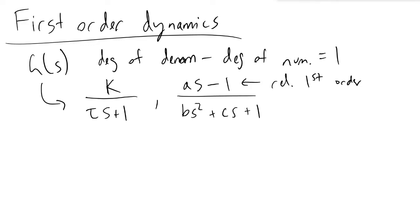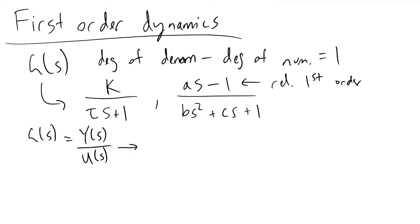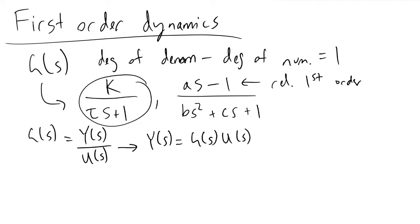To continue our analysis of a first-order system, the transfer function G(s) is defined as Y(s) divided by U(s) — our output divided by our input. Solving for Y(s), we get G(s) times U(s), which in our example equals k over (τs + 1) times whatever U(s) is.